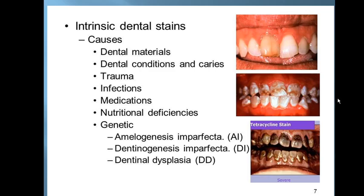Intrinsic stain causes include dental materials, dental conditions, trauma, infection, medications like tetracycline, nutrition deficiency, and genetic factors. Genetic causes include amelogenesis imperfecta, dentinogenesis imperfecta, and dental dysplasia. These are examples of intrinsic dental stains; dental materials like amalgam can also be responsible.